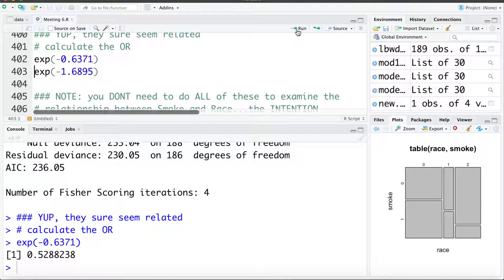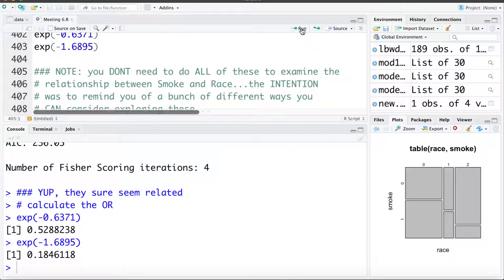It's roughly 0.50 so a black individual is about half the odds of smoking as a white individual. We exponentiate the coefficient for the other category that's going to give us odds ratio of smoking for other versus white. That comes out to 0.18. Someone categorized as other is 0.18 times as likely to smoke than a white person or 82% lower odds of smoking.